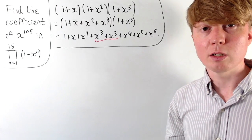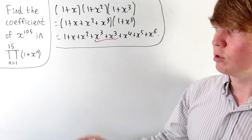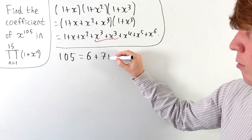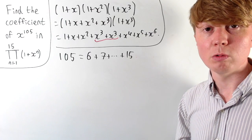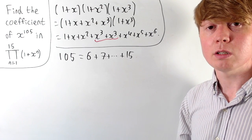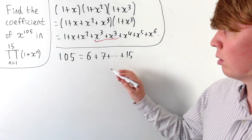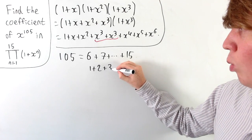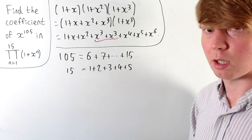This still seems like quite a daunting task — we certainly don't want to try and find all the different ways of getting integers to sum to 105 using integers from 1 to 15. For example, one nice way of getting 105 would be 6 plus 7 and so on all the way up to 15. But we'll be able to simplify the problem by focusing not on the powers of x we've included, but actually the ones we haven't included — so not including x to the powers 1, 2, 3, 4, or 5. The sum of those remaining powers is 15.